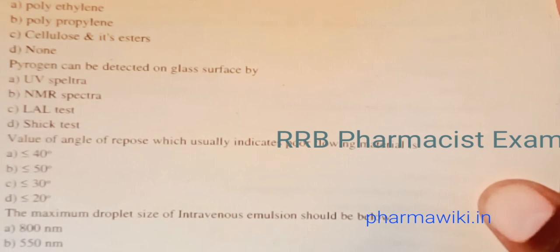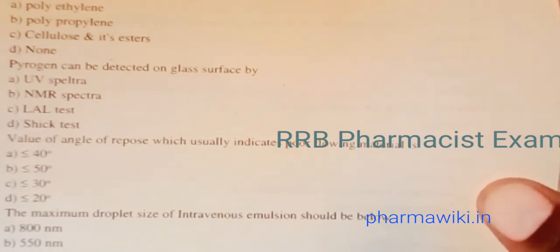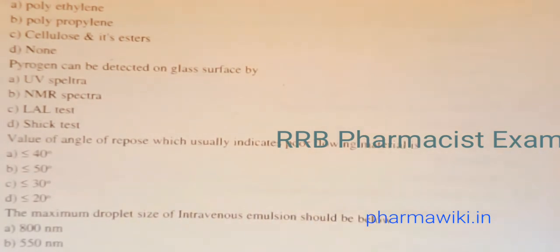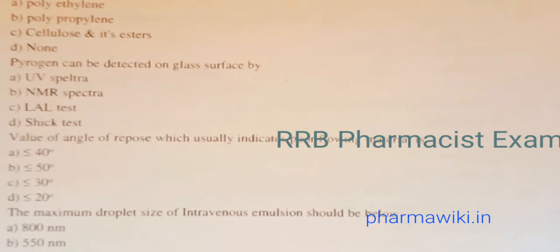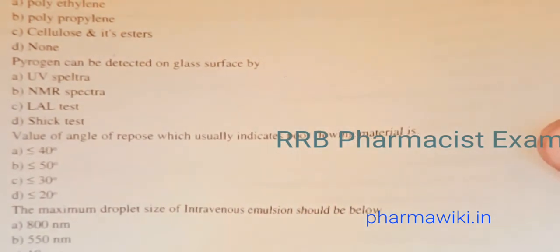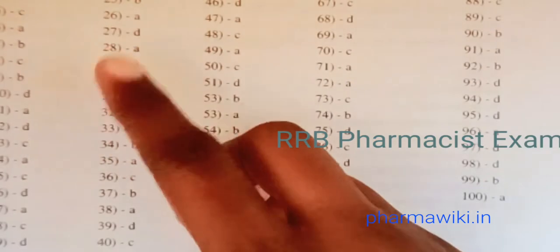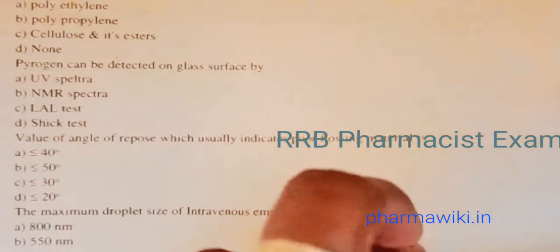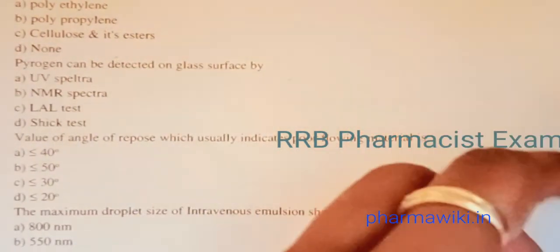Question 7: The maximum droplet size of intravenous emulsion should be below — 800 nm, 550 nm, 10 µm, or 40 µm. The answer is B, 550 nm. The maximum droplet size of an intravenous emulsion should be below 550 nm.